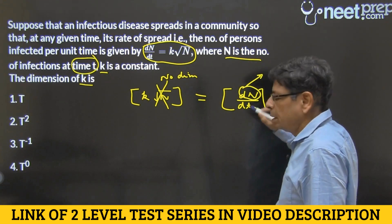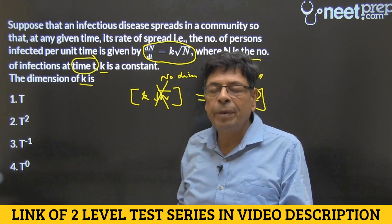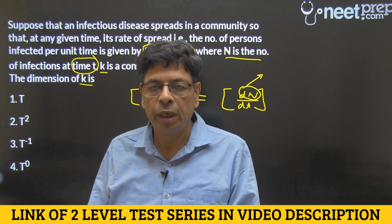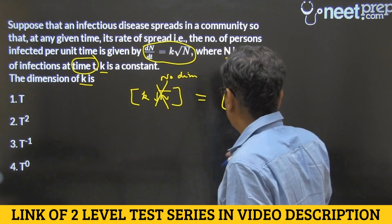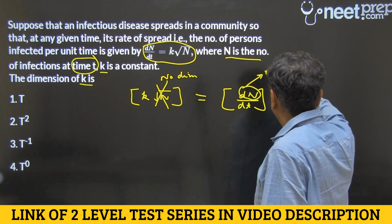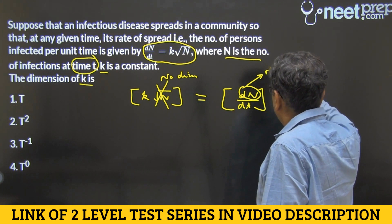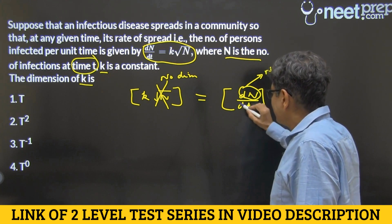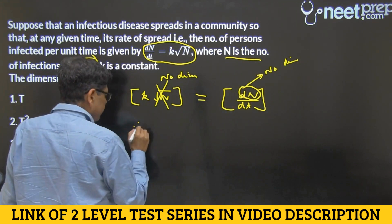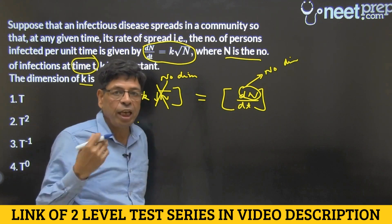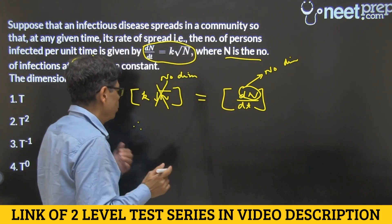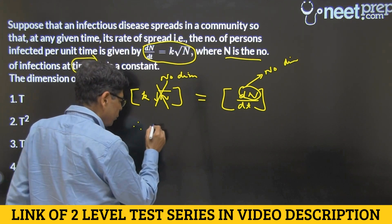dn is nothing but the difference between two values of n — it is of the type n1 minus n2 — so it also has no dimension. Meanwhile, dt has the dimensions of time, because dt is the change in time, like t-final minus t-initial, which has the dimensions of time.